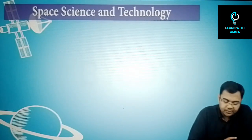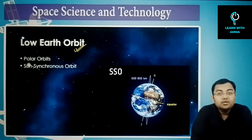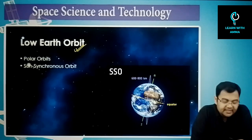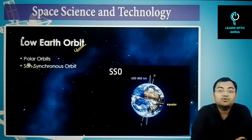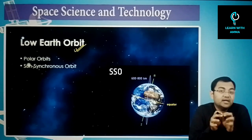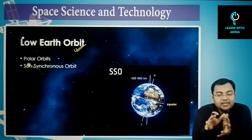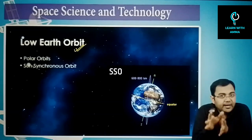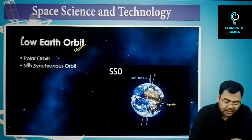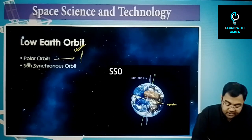The first kind of orbit we discuss is the low earth orbit. There are two kinds of orbits normally discussed: the polar orbit and the sun-synchronous orbit. Sun-synchronous orbit is a very special case of polar orbit. Polar orbits lie in the polar plane.